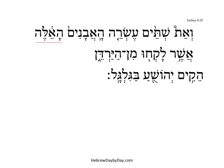We notice here 'cha'elea,' the demonstrative pronoun. It grammatically functions like an adjective, modifying here 'ha'avanim,' the stones. Now it has to agree in gender, number, and definiteness. So here it's both plural, but it's common, so it can work either way. And it has the article on both — so it's 'the stones, these ones,' these stones.